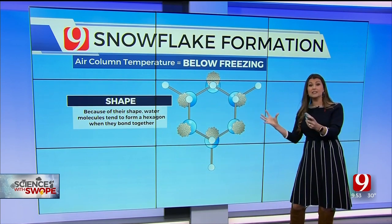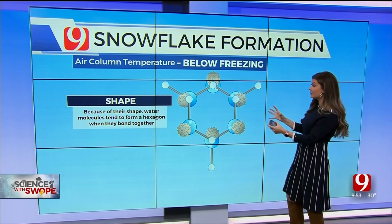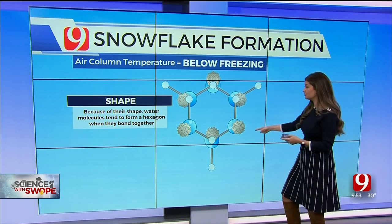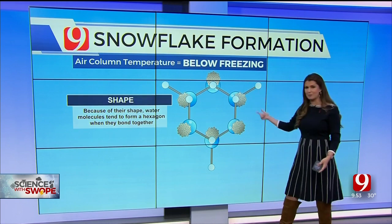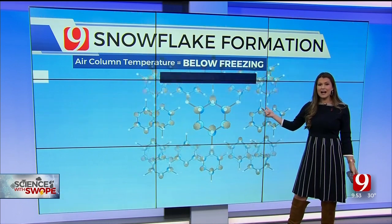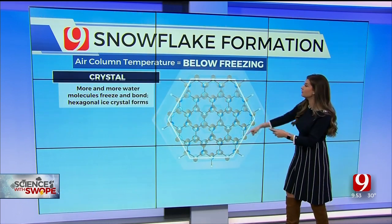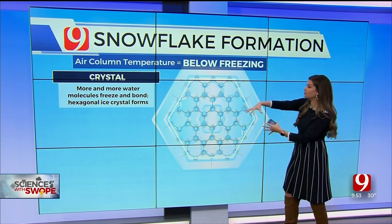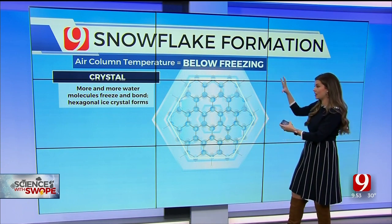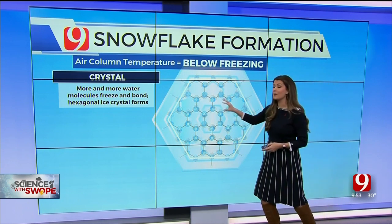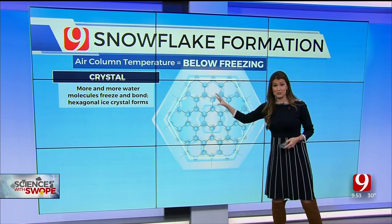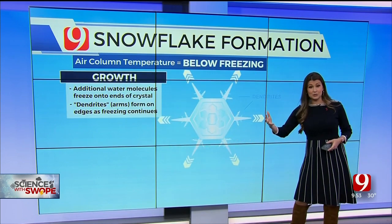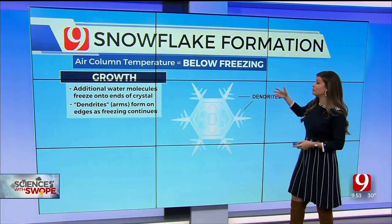You start to get a collection of those water molecules together, and eventually they bond together and start to form a hexagon — just because that's the shape of the water molecule. As you get more of them mixing and bonding together, it starts to form a larger hexagon, and you start to see the form of an ice crystal. The more water molecules you get, the more that ice crystal becomes more apparent.